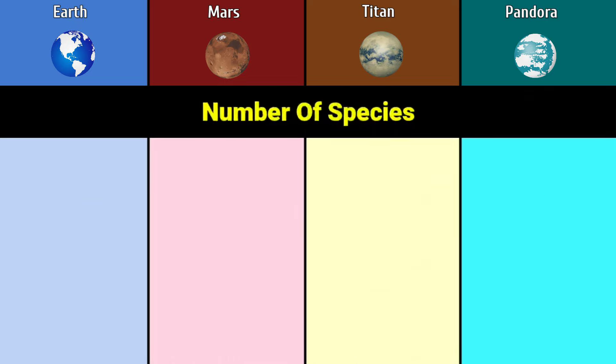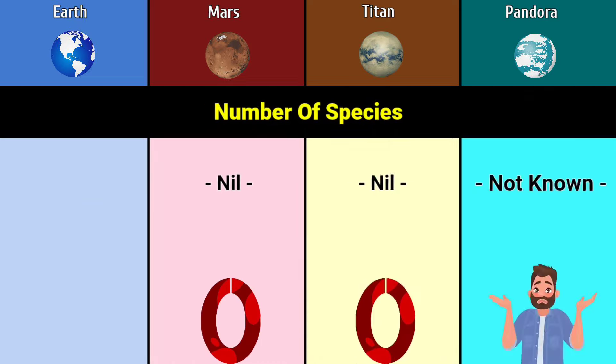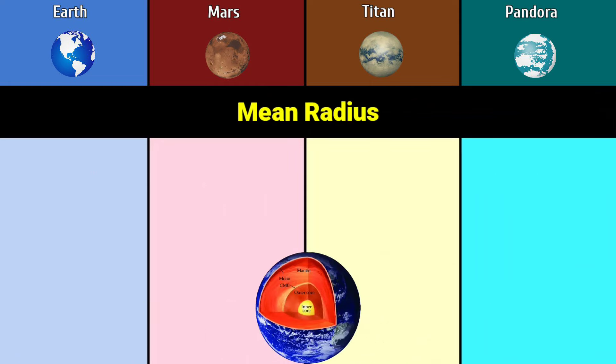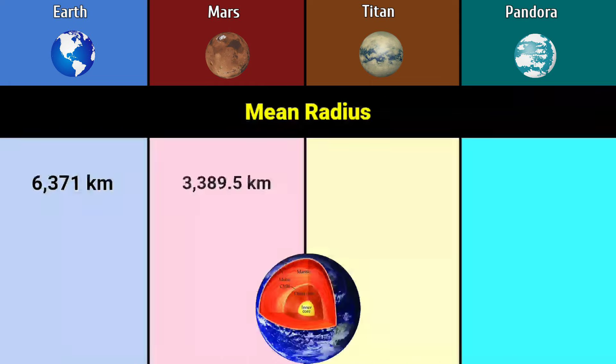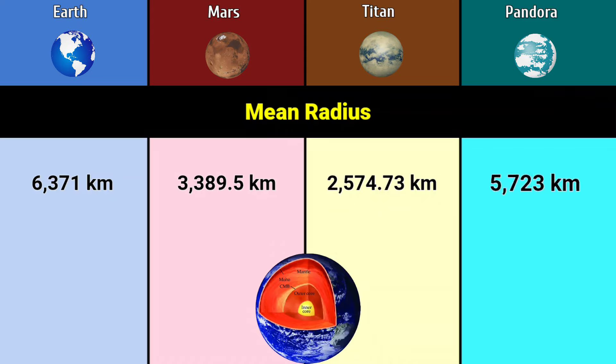Number of species: 8.7 million, 0, 0, not known. Mean radius: 6,371 kilometers, 3,389.5 kilometers, 2,574.73 kilometers, 5,723 kilometers.